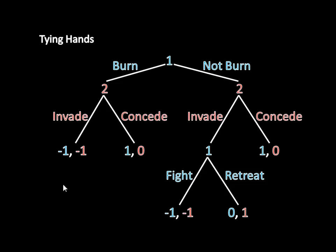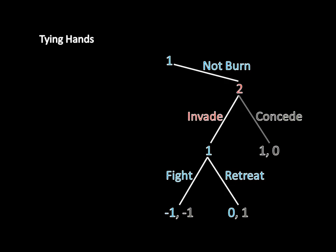Now to solve this game, all we need to do is apply some simple backward induction. Let's start on the right side of the game tree here. So suppose that Country 1 begins by not burning and then Country 2 invades. Well, Country 1 can fight or retreat. If it fights, it gets negative one. If it retreats, it gets zero. Zero is greater than negative one, so that means if Country 1 does not burn the bridge and Country 2 invades, then it makes more sense for Country 1 to retreat than fight a costly battle over the island.